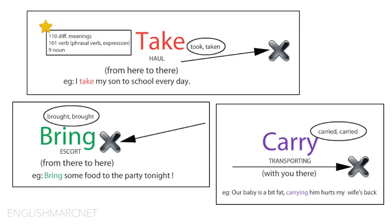Below on your right we have 'carry.' The past is 'carried' and the past participle is the same — 'carried.' It's a regular verb. And it means similar to take, but to carry with you — not to take somewhere else. What do I mean by that? Our baby is a bit fat, and carrying him hurts my wife's back. So carrying means with you, on top of you, or you hold him, or in your hands. So that's carry.